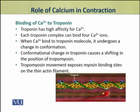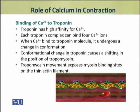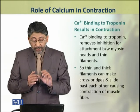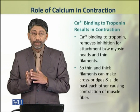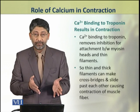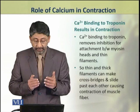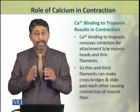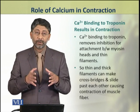This conformational change in troponin causes a shifting in the position of tropomyosin. When tropomyosin moves from its position, as a result, the myosin binding sites on the actin thin filament become exposed. The calcium binding to troponin removes the inhibition that was present for binding of myosin with actin. When this inhibition is removed, myosin heads attach to actin and cross bridges are formed.